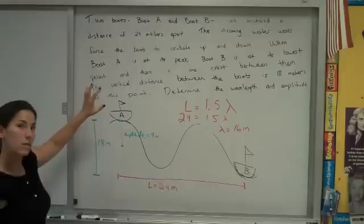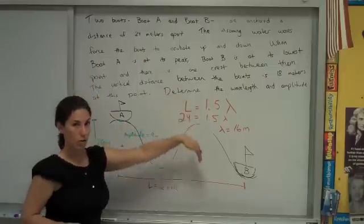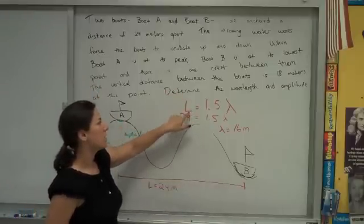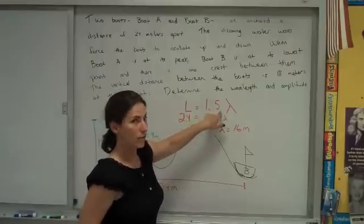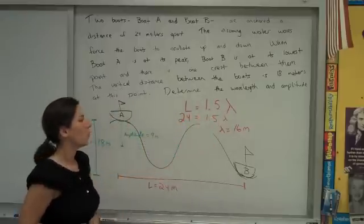Okay, so key things in a problem like this, absolutely drawing a picture, making sure you know how many crests are in the middle, and then setting up L equals blank waves and filling in the blank from the picture. In this case, it was one and a half waves. All right, good luck.